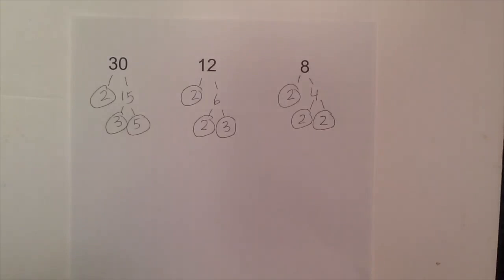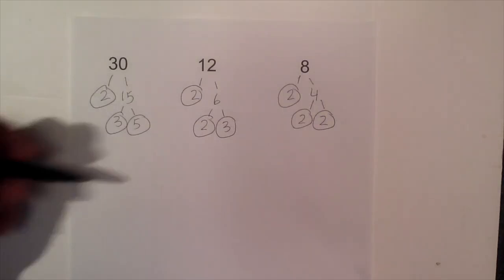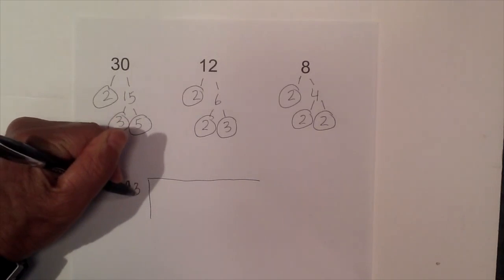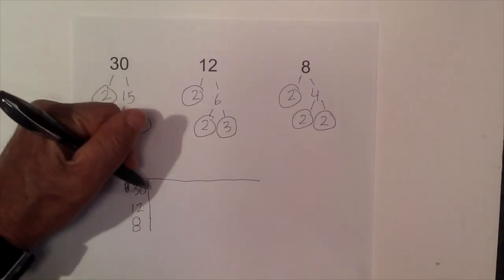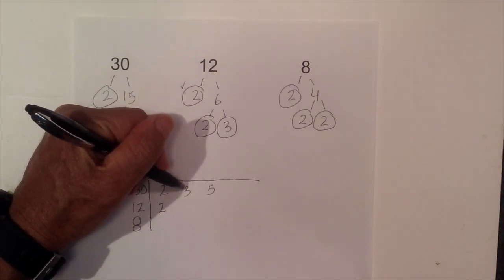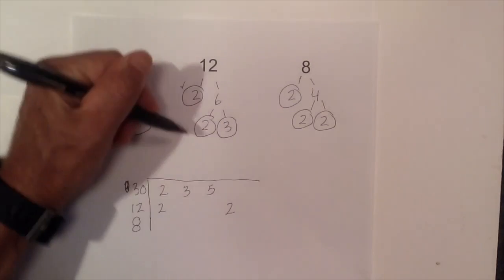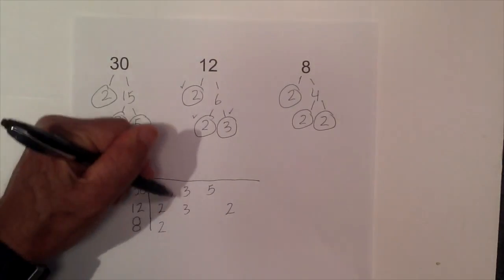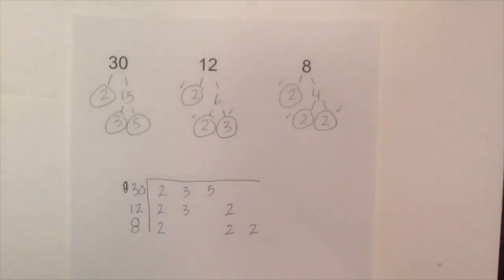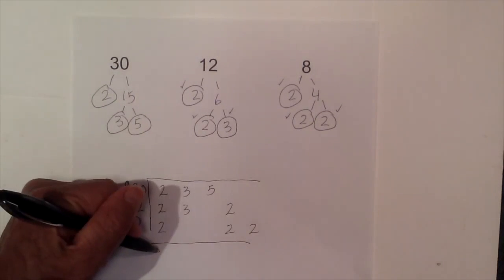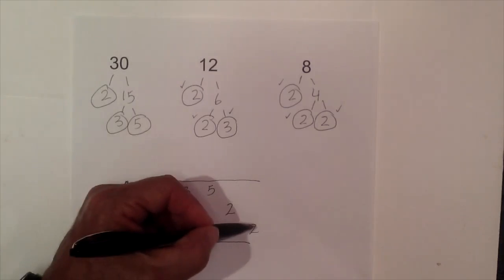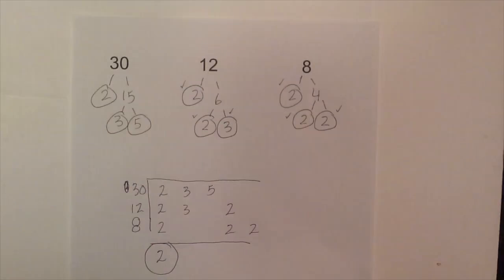Let's work one final example. We have three numbers again: 30, 12, and 8. Here is the factor tree. I will create my prime factorization chart. For 30 I write 2, 3, 5. For 12 I have a 2 — I skip a space because there is no matching 2 in that position — and then we have a 3. For 8 I have 2, 2, and then no other matching 2. Now I have three numbers in the vertical column for the first 2, so I will write a 2. I have two 3's but not three, so I can't use the 3. I can't use the 5 or the remaining 2's either. So the GCF of 30, 12, and 8 is 2.